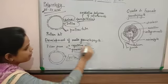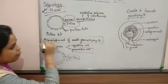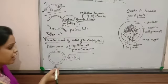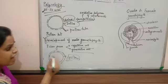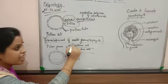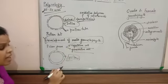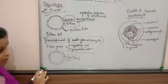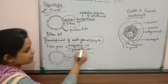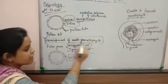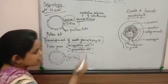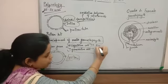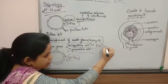Now coming on to the development of the male gametophyte. In pollen grains in the intine region, there are two types of cells — vegetative cell and generative cell. The vegetative cell helps in the development of the pollen tube.